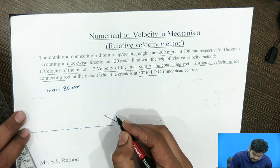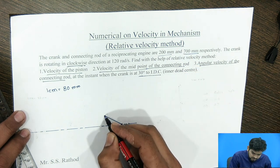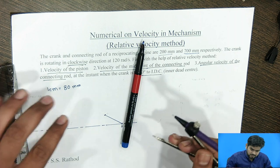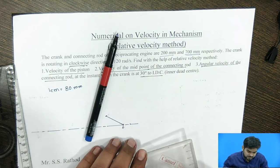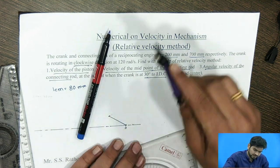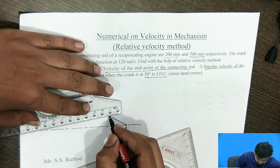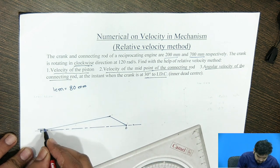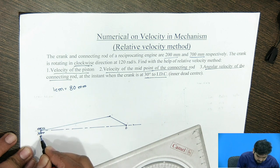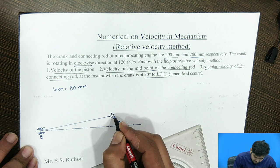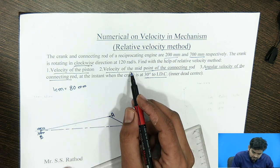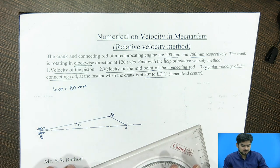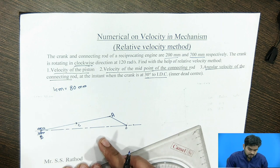This is called the crank, and the connecting rod is 700 mm. From the A point, by using the compass, mark 700 mm — that is, 700 divided by 80 at the chosen scale. We are getting the point B. This is the point B; this is the connecting rod; this is the crank; and this is the slider. They are asked to find out the velocity at the midpoint, so we have to find the midpoint of the connecting rod. The C point is the midpoint. So we have drawn the space diagram as per the given specification.